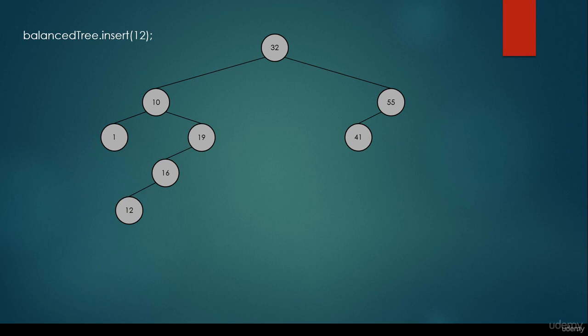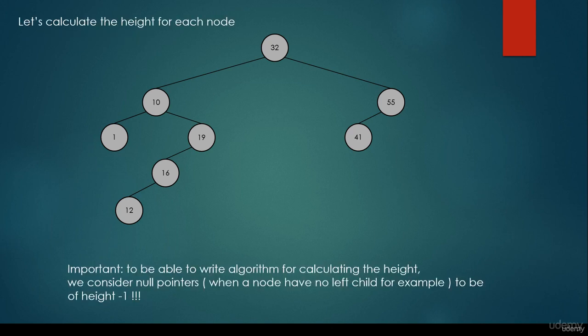We have been discussing the difference between balanced trees and standard binary search trees. For balanced trees we have to check on every insertion whether the tree is balanced or not. So let's calculate the height parameters. It's important that to be able to write the algorithm for calculating the height, we consider null pointers — when a node has no left child, for example, to be of height minus 1.